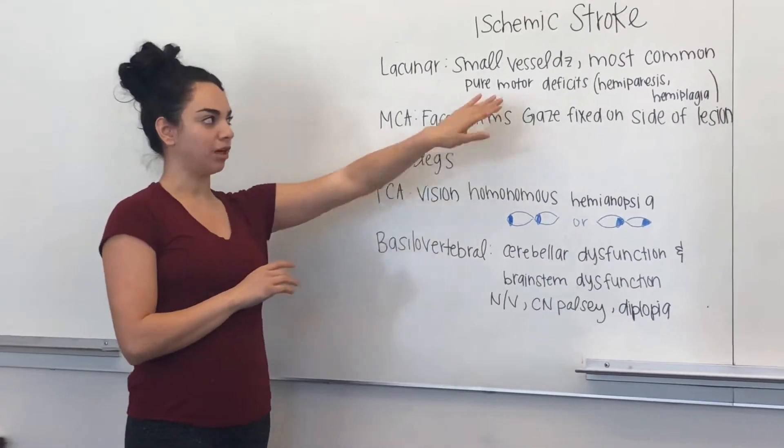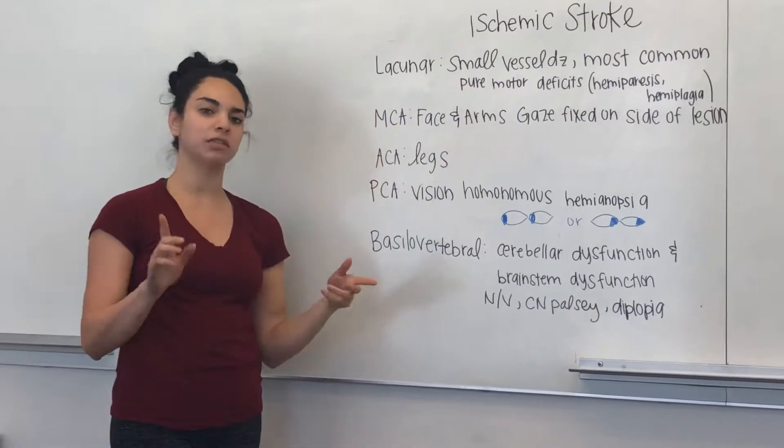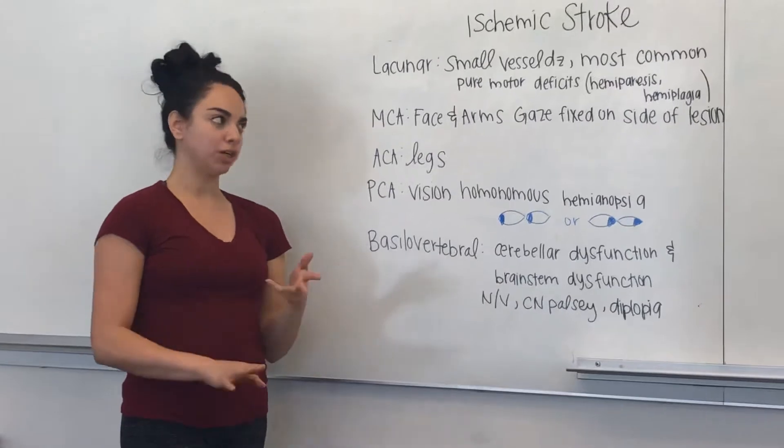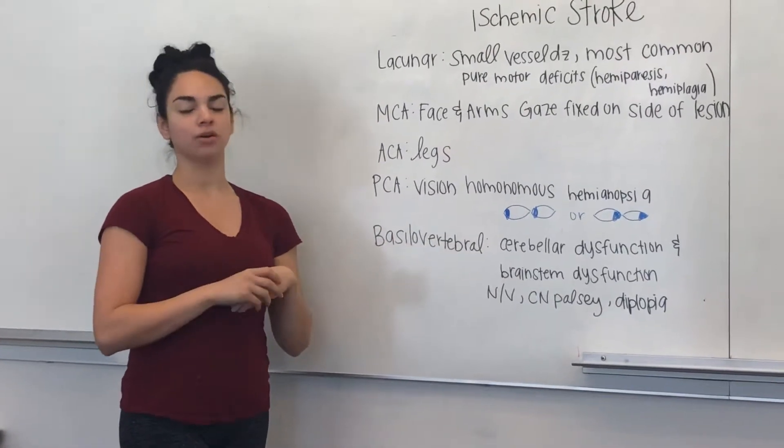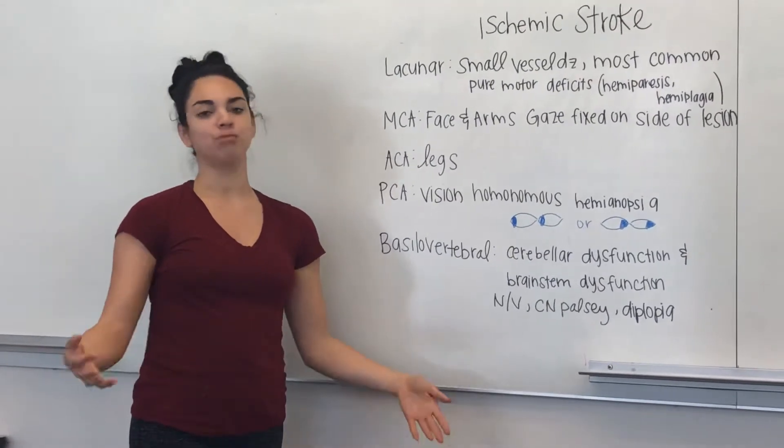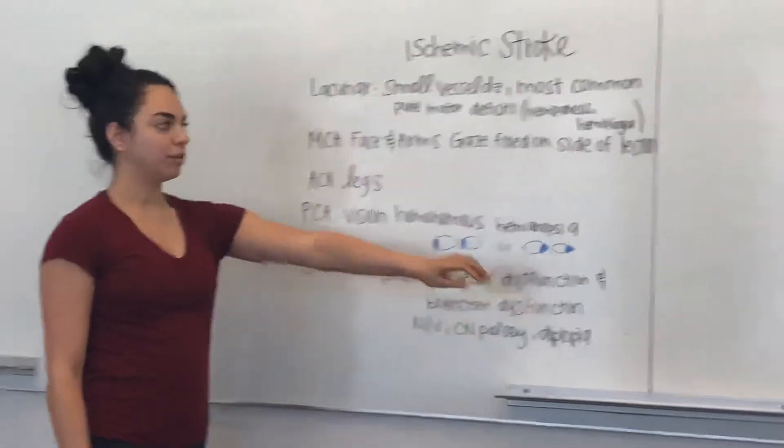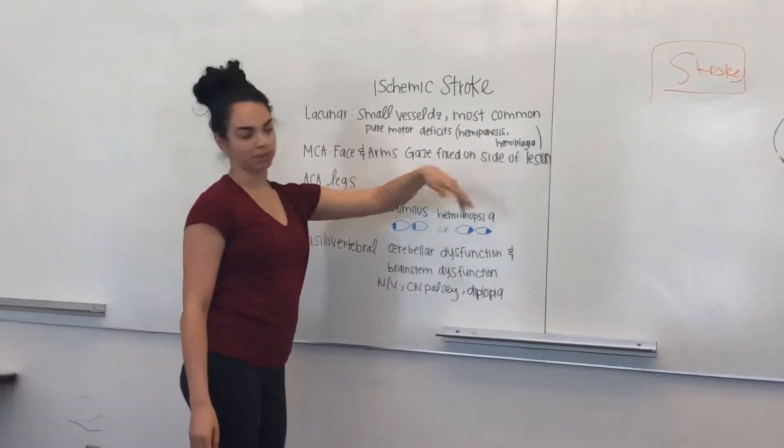And so what you're going to find is that it's most commonly going to be a pure motor deficit. So for example you could have like cranial deficits, sensory deficits, motor deficits, and this is purely motor. So they can feel you, you know, they're conscious, they can speak, their cranial nerves are intact, but there is like absolutely no motor ability so they cannot move. So hemiparesis and then hemiplegia.